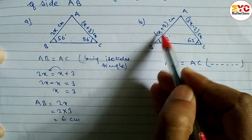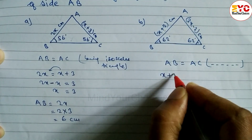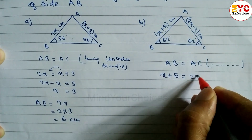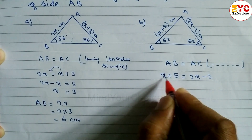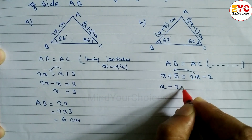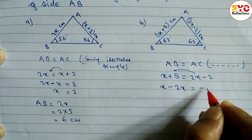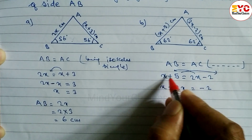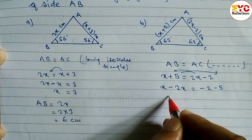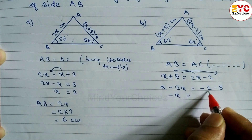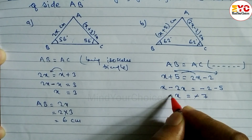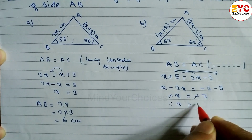Side AB equals x plus 5, which is equal to AC, and AC equals 2x minus 2. Now arranging: x plus 5 equals 2x minus 2. Taking 2x to the left gives x minus 2x equals minus 2 minus 5. That gives minus x equals minus 7. So x equals 7.